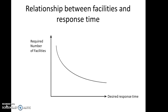Now we have to decide which is to be given priority: whether to increase the number of facilities or to reduce the response time. Certainly, our ultimate objective is to reduce the response time. As you see in the graph, we have to increase the number of facilities to reduce the response time. So the deciding factor here is response time. First we decide the desired response time for the product, and based on that, we decide the required number of facilities.